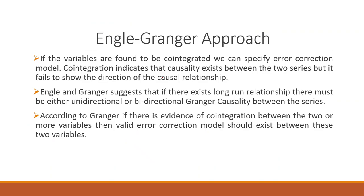So this is what the error correction model is. If the variables are found to be co-integrated, we can specify the error correction model. Co-integration indicates that causality exists between two series, but it fails to show the direction of the causal relationship. Engle and Granger suggested that if there exists a long-run relationship, there must be either unidirectional or bidirectional Granger causality between the series. According to Granger, if there is evidence of co-integration between two or more variables, then a valid error correction model should exist between these variables. Let's try to understand by two series: GDP and inflation — we know that in any country these two series are co-integrated.